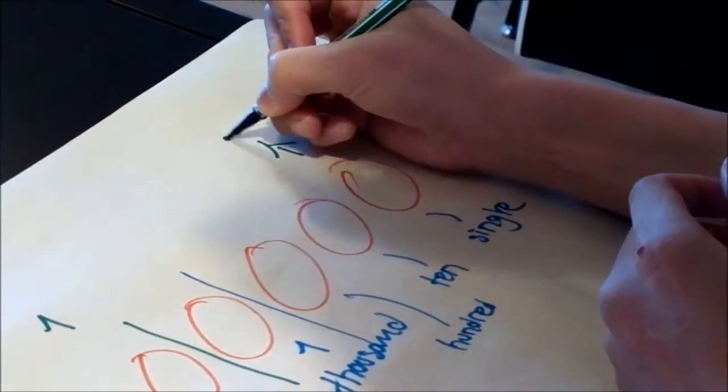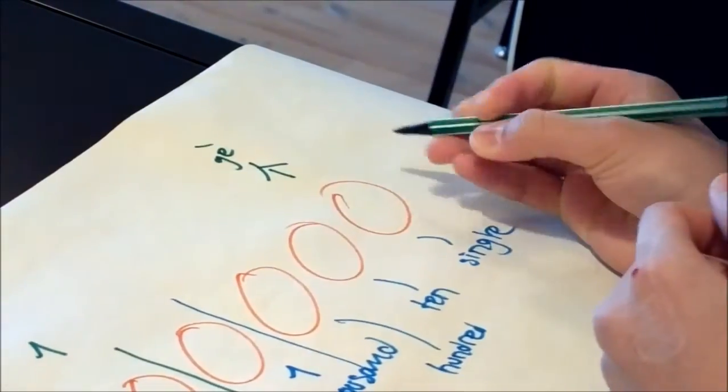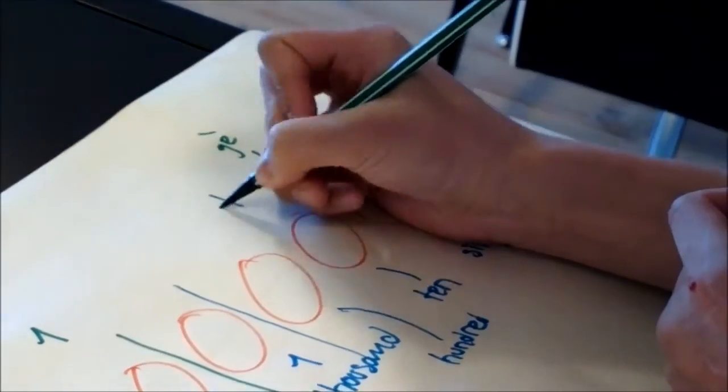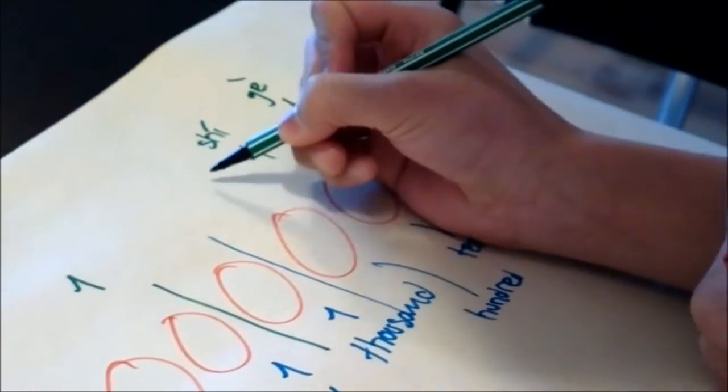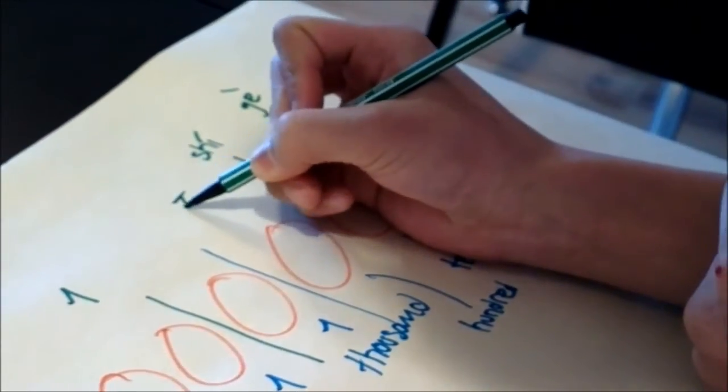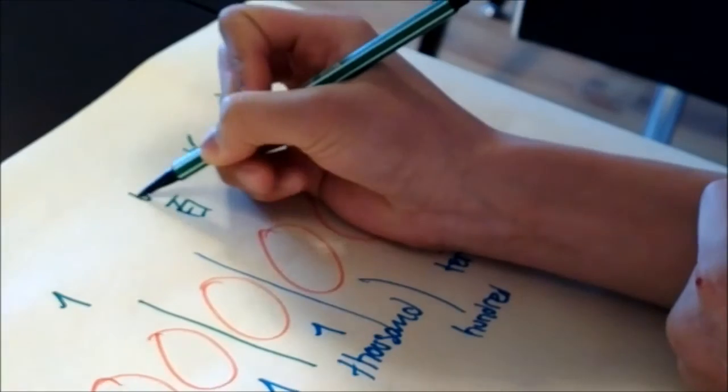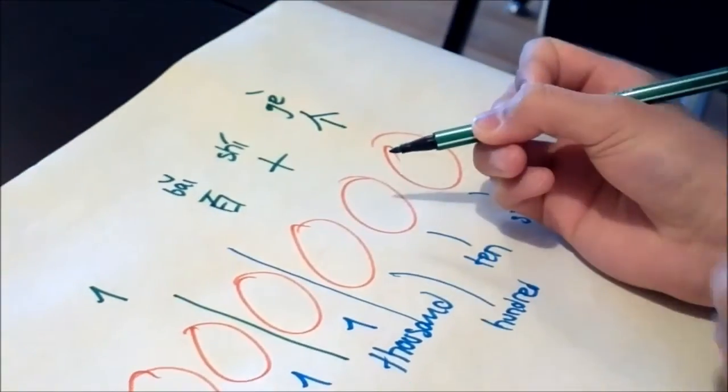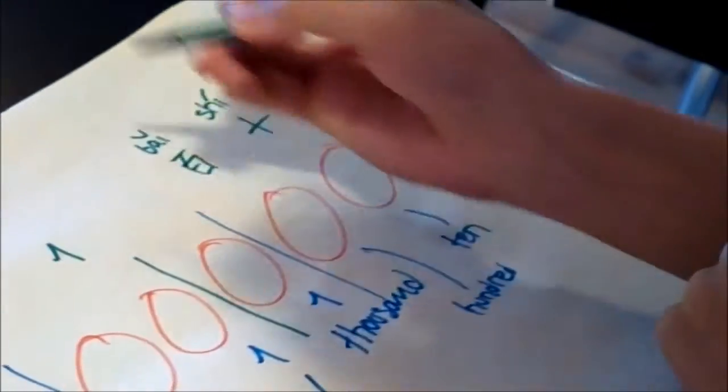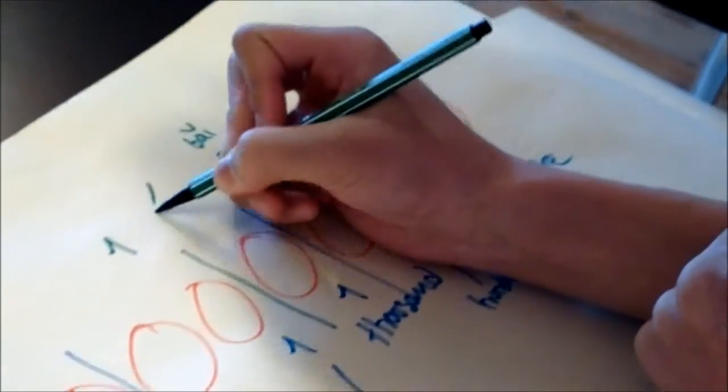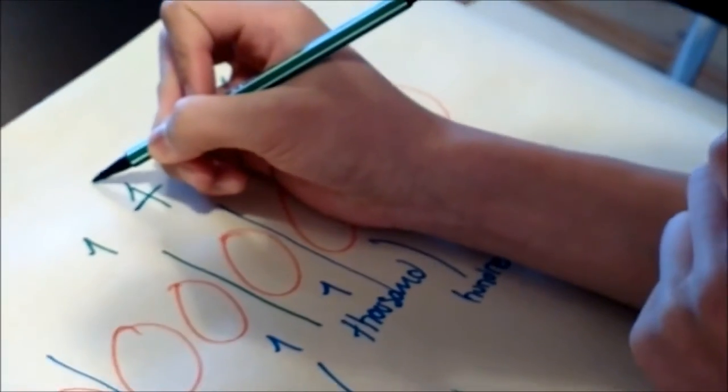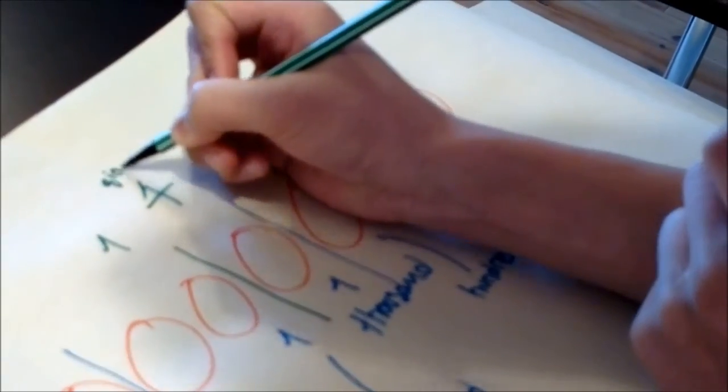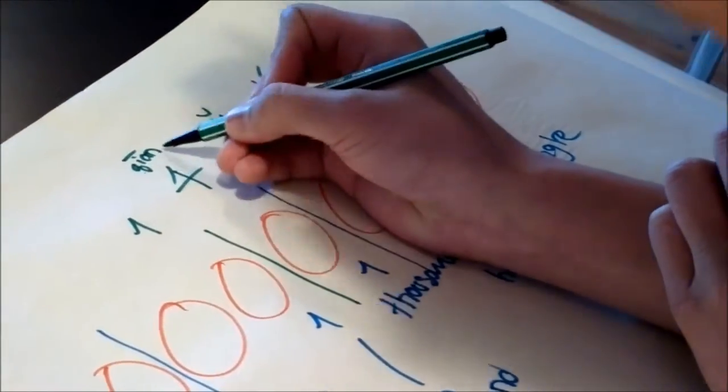So here, in Chinese, single is ge. So ge, I'll write the ge. That means single. And then this shi. Shi is tenth. Bai looks like this. Bai is hundreds. And then thousands is qian, which is like this. So that's qian.